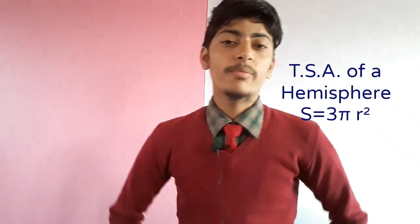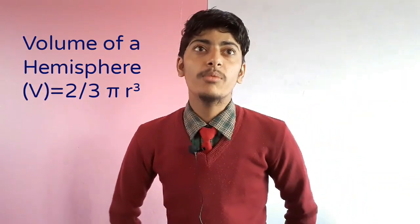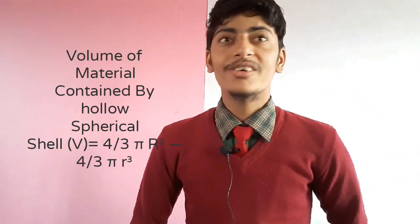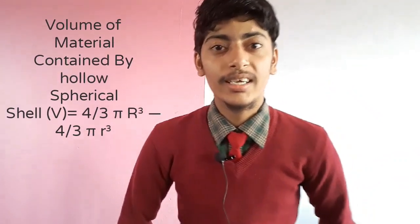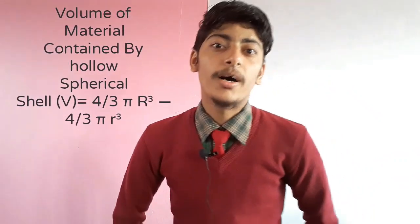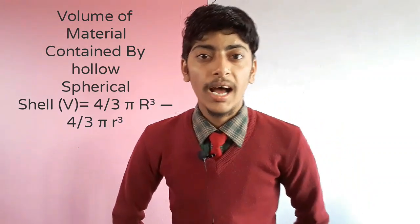At first, TAC of the hemisphere is 3πr², and volume of the hemisphere is (2/3)πr³. And the volume of the hollow sphere is (4/3)πR³ minus (4/3)πr³.